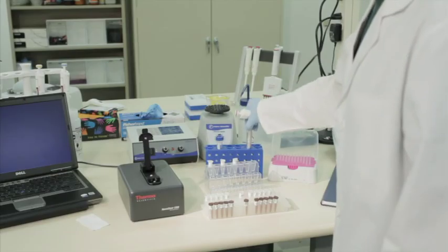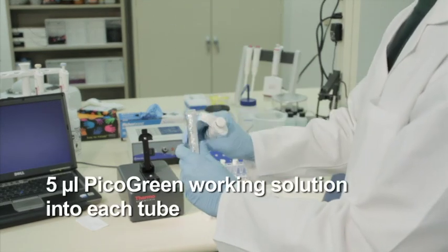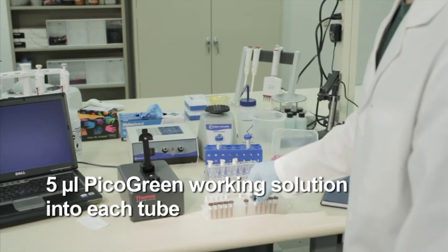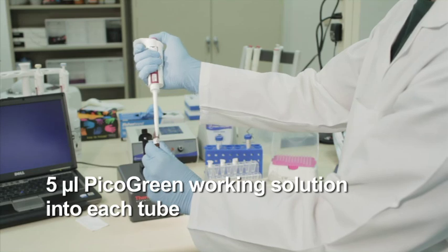After preparing the pico-green working solution according to the manufacturer's protocol, transfer an equal volume of the solution to each tube containing either double-stranded DNA standard or double-stranded DNA sample, in this case, 5 microliters.